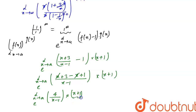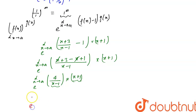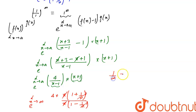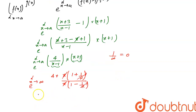And if I take x common from here and here, it will be e to the power limit x tends to infinity of 4 · x(1 + 1/x) upon x(1 − 1/x) — so x and x cancel out. Putting x equal to infinity gives 0 for the 1/x terms, so it will be e to the power 4 · 1, which equals e to the power 4.